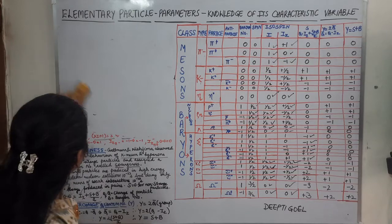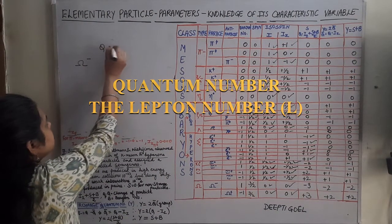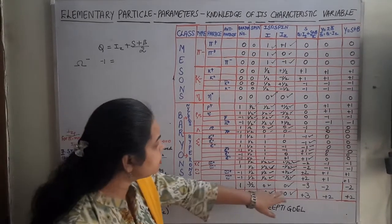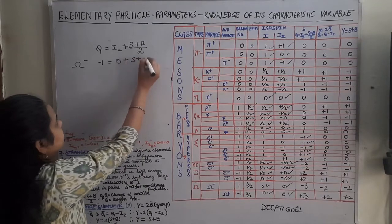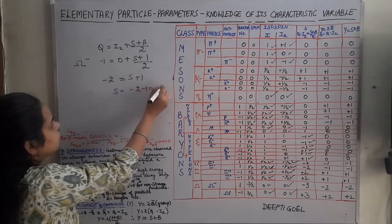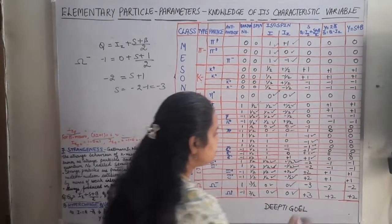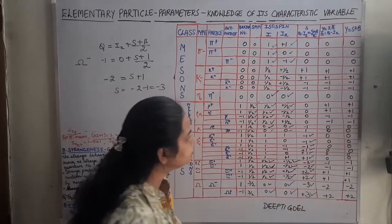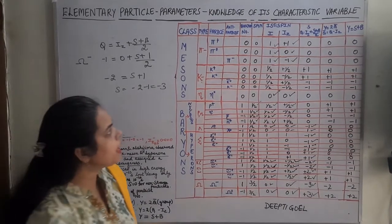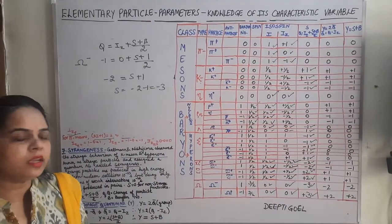For omega minus: charge is -1, Iz is 0, B is 1. So -1 equals 0 plus S plus half, giving -2 equals S plus 1, so S equals minus 3. For omega positive (antiparticle), strangeness is plus 3. For the cascade particles, the values are minus 2 and plus 2. For lambda naught, strangeness is minus 1 and plus 1 for its antiparticle. For K positive and K naught, strangeness was plus 1; for their antiparticles, minus 1.